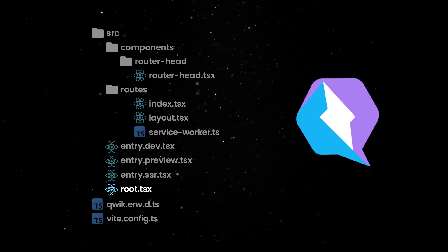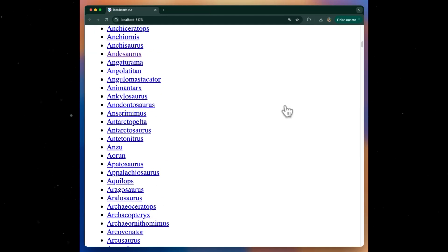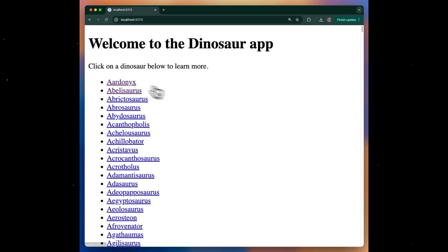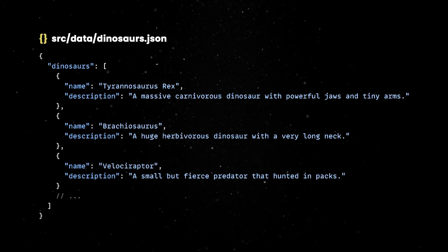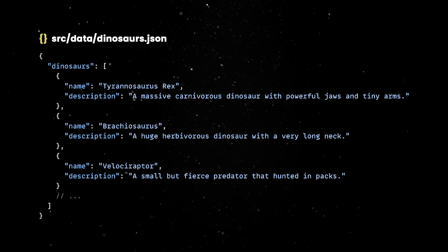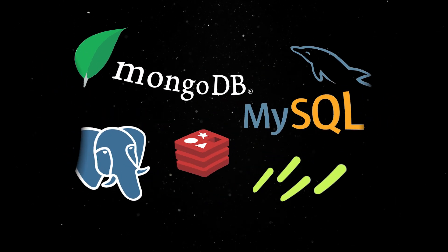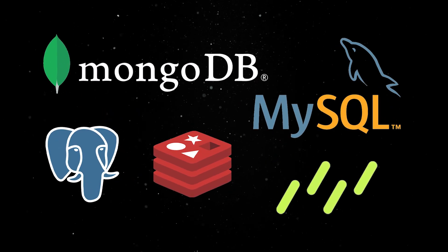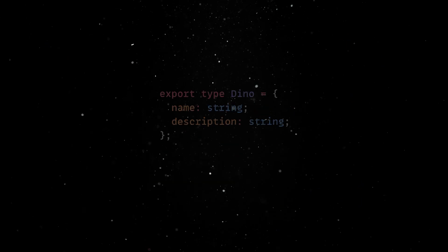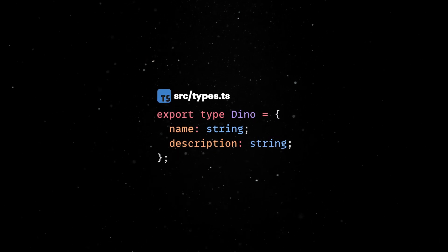With the basics out of the way, let's jump to the fun part — coding. Our app will display a list of dinosaurs, and when you click on one, it'll take you to a dinosaur page with more details. We'll add our dinosaur entries in the dinosaurs.json file under the data directory. Our app will pull data from a file, but in a real-world project, data management is handled by a database. Pro tip: Dino has amazing support for ORMs as well. It also comes with TypeScript support out of the box, and we'll add our type definitions in the types.ts file.